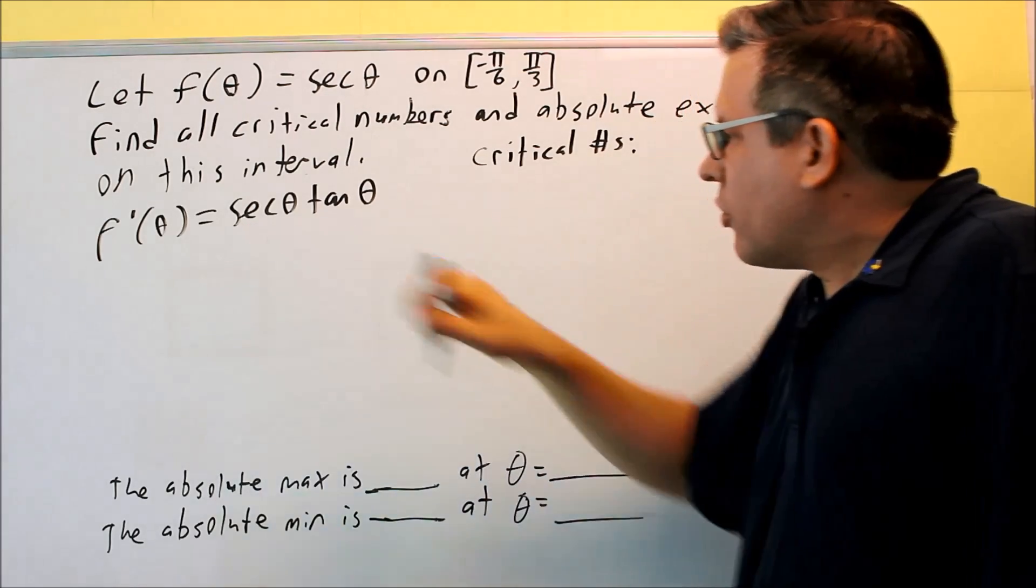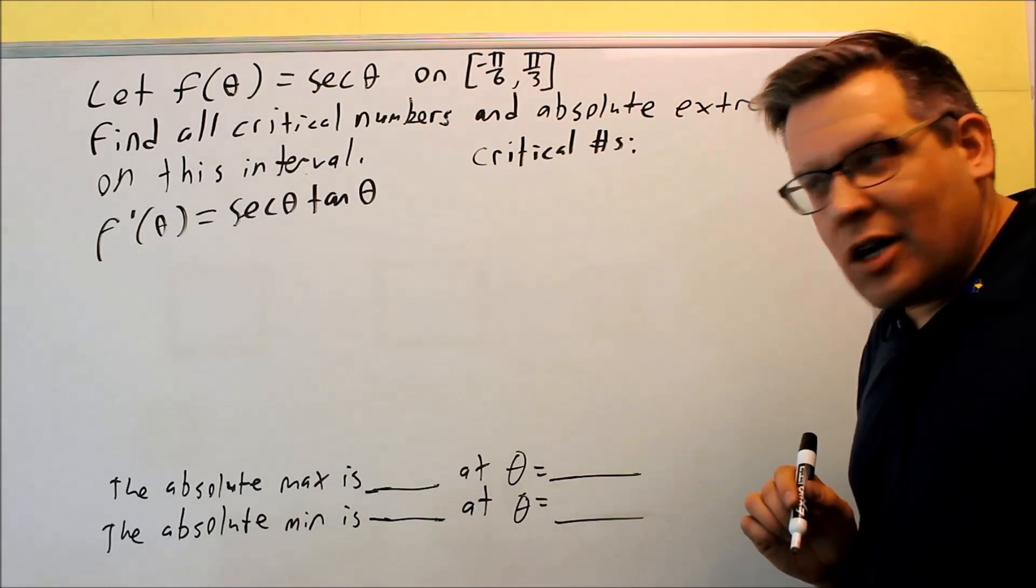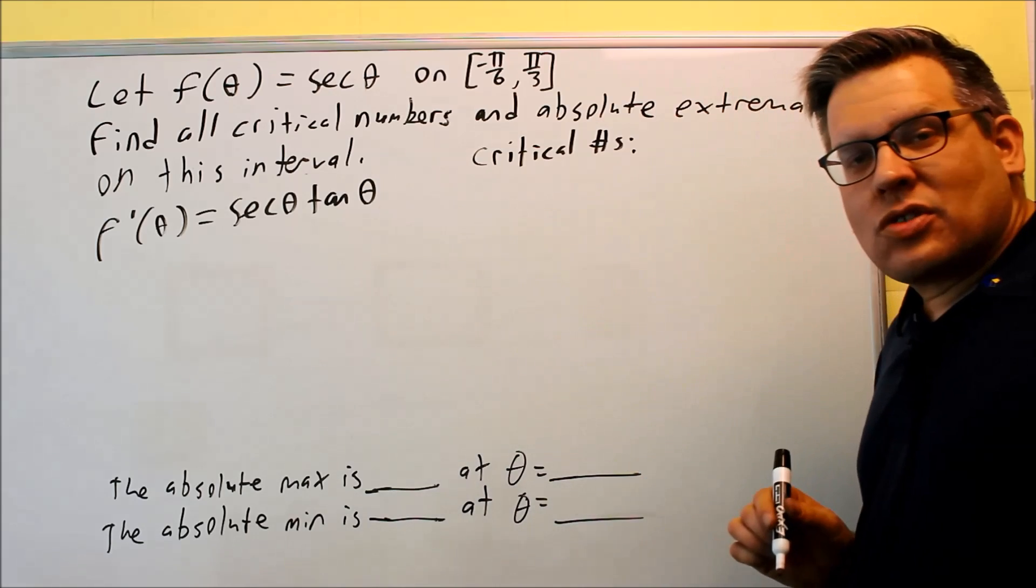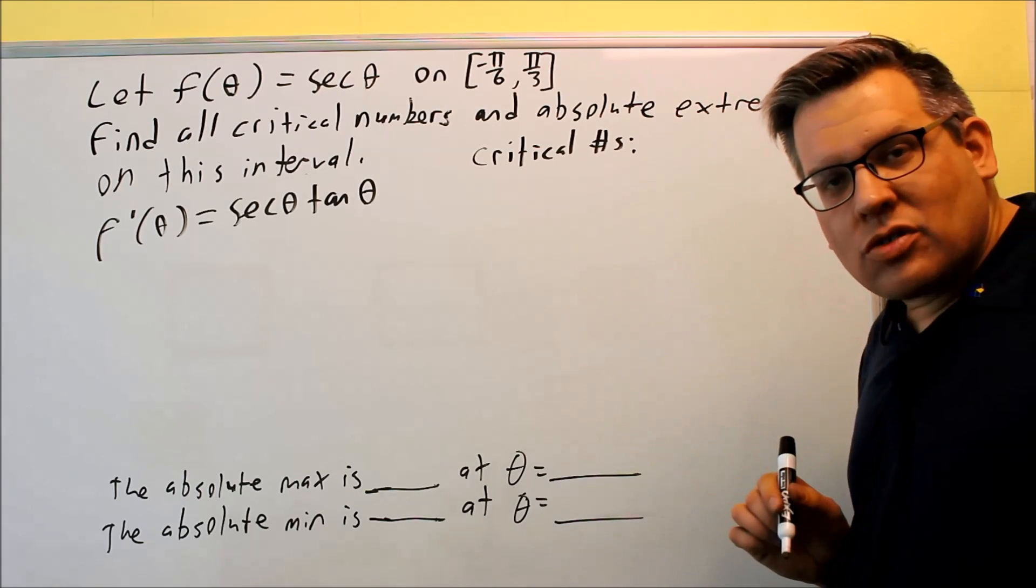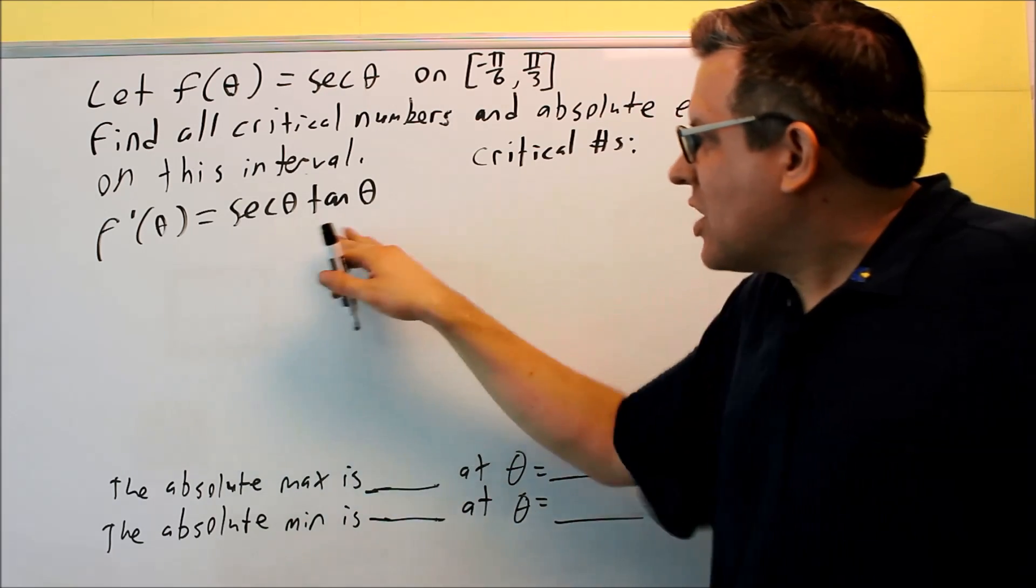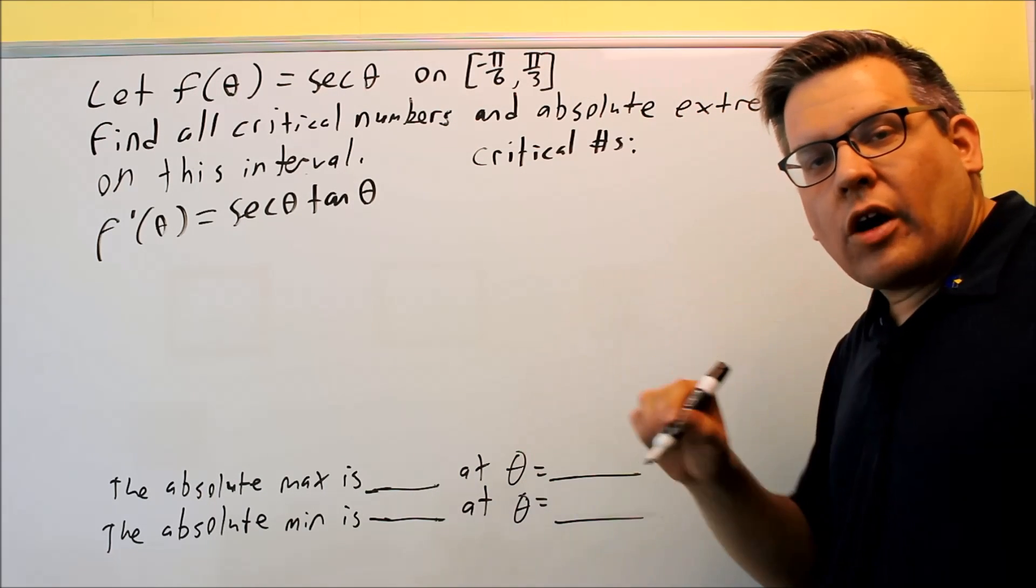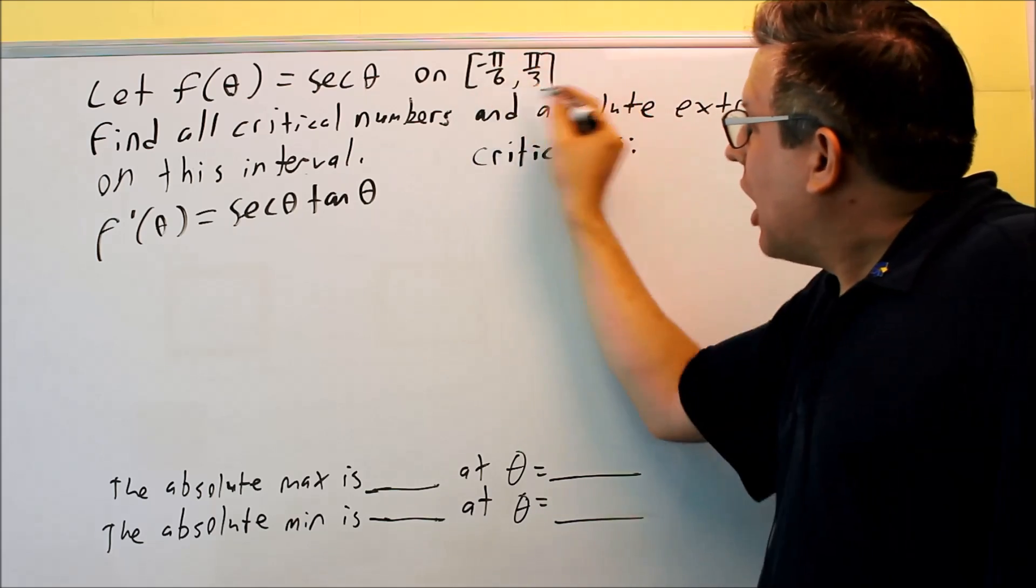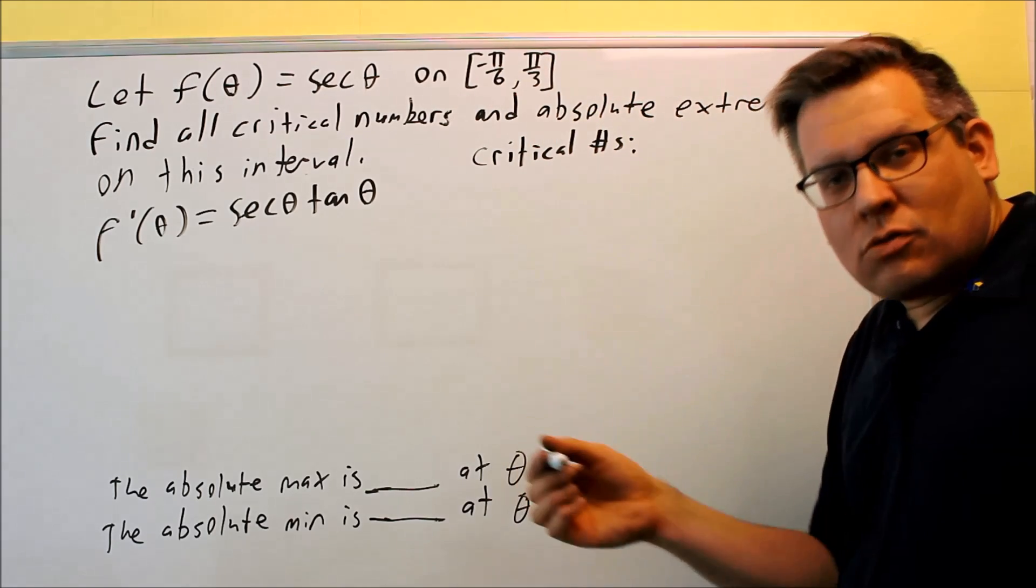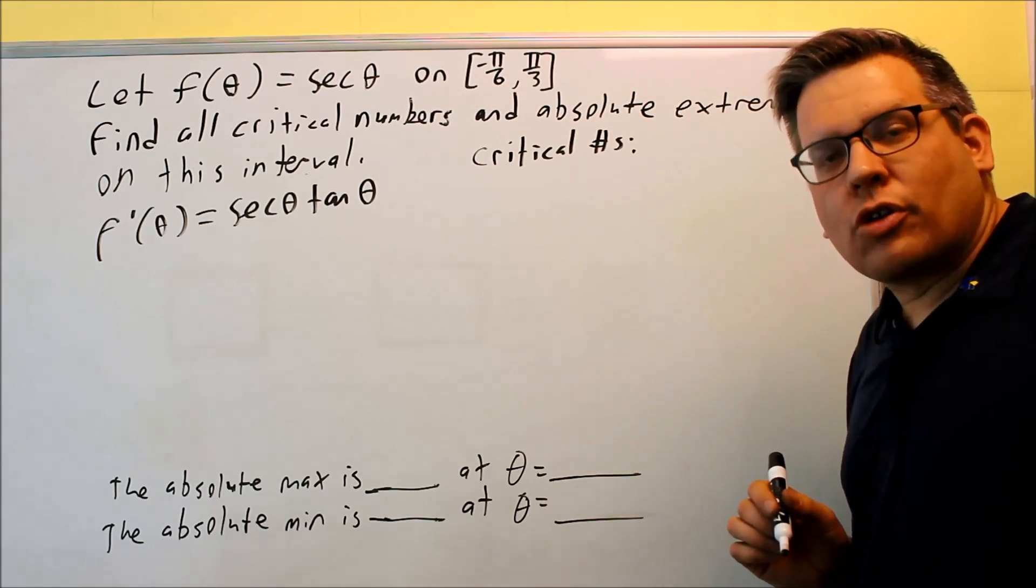So let's take a look at both of these. Now secant is the same thing as one over cosine, and tangent is the same thing as sine over cosine. So because each of these have a cosine on the bottom, what you're going to do is look at where cosine equals zero on my interval, and that's a potential place where I might have a critical number.